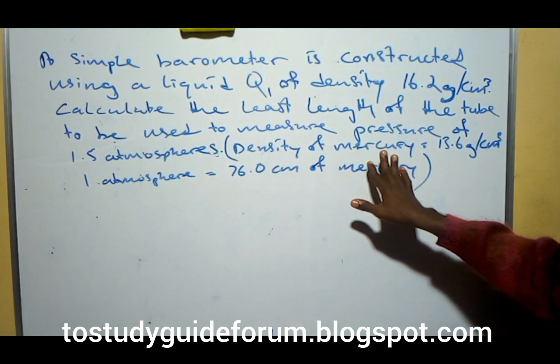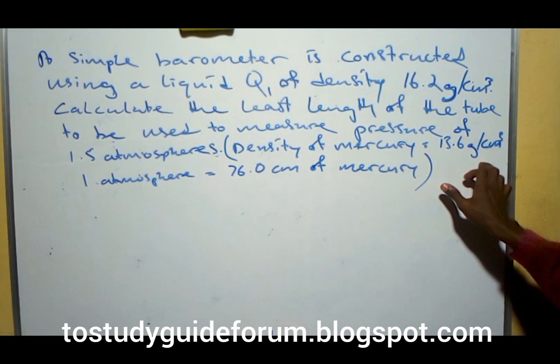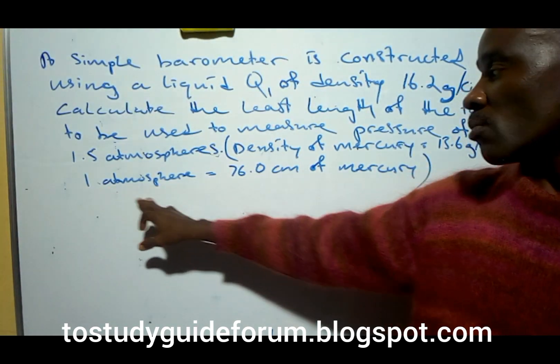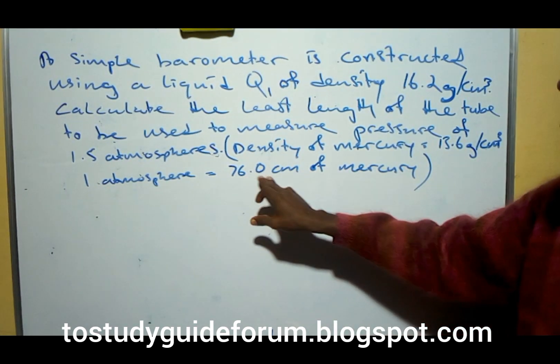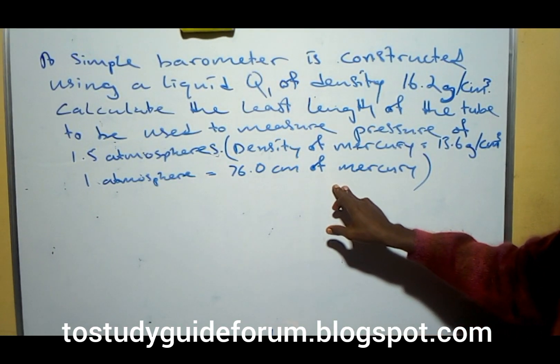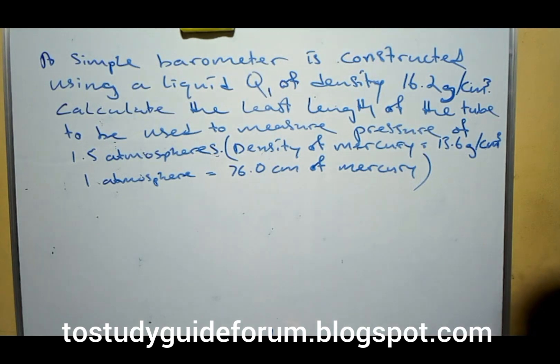The density of mercury is 13.6 gram per cm³, and 1 atmosphere is equal to 76.0 cm of mercury.